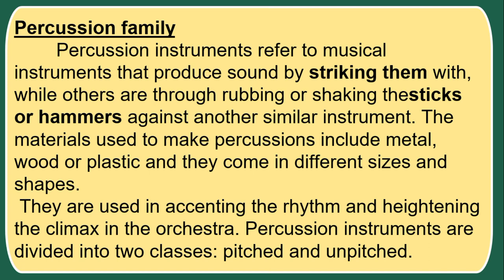Percussion instruments produce sound by striking them with sticks or hammers, while others are played by rubbing or shaking them against another similar instrument. The materials used include metal, wood, or plastic, and they come in different sizes and shapes. They are used in accenting the rhythm and heightening the climax in the orchestra. Percussion instruments are divided into two classes: pitched and unpitched.